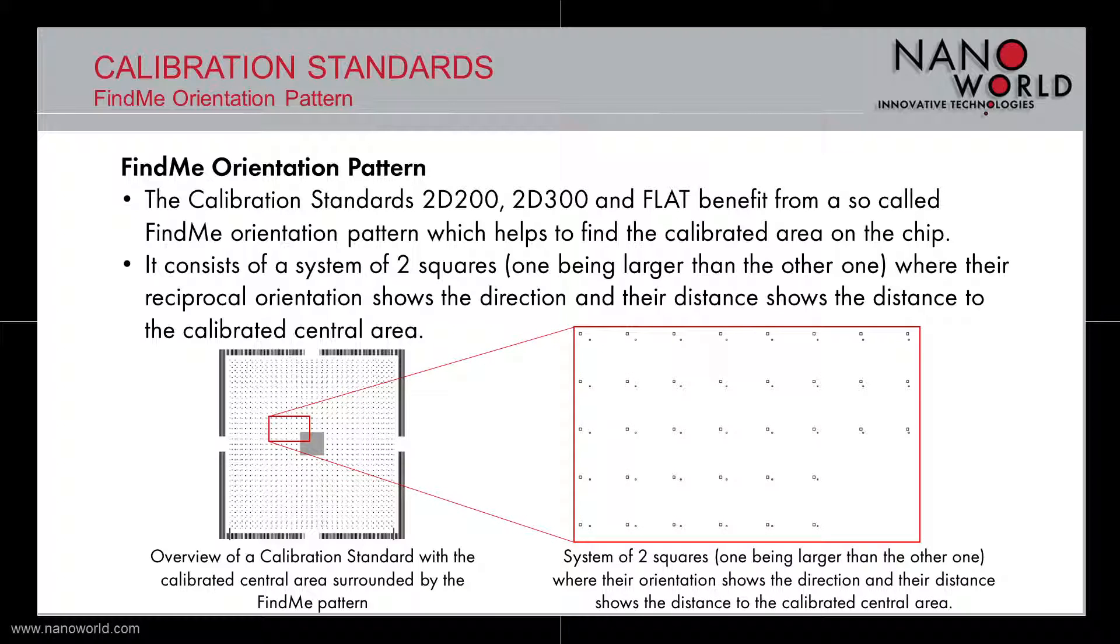The Find-Me pattern consists of a system of two squares, one being larger than the other one, where their reciprocal orientation shows the direction and their distance shows the distance to the calibrated central area as shown on bottom right image.